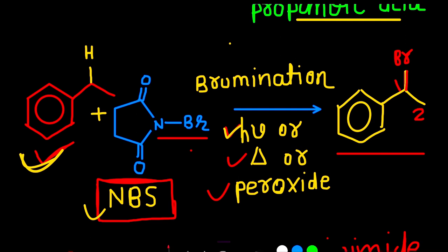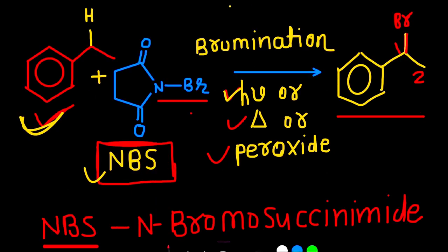And this product is 1-bromo-1-phenylethane. And this reaction is called bromination reaction.